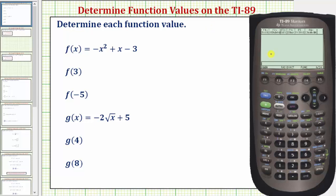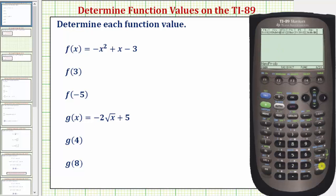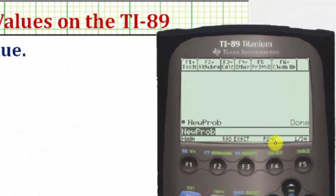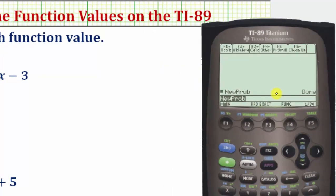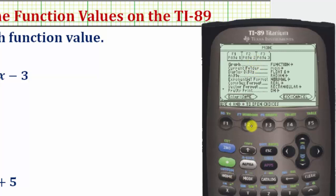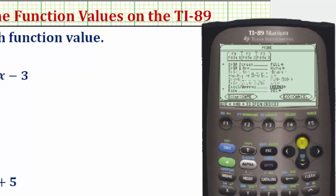Let's first start a new problem by pressing second F1 for F6, two for new problem, and then enter. I also recommend having the calculator in exact or automatic mode. Notice here at the bottom of the screen we are in exact mode. To review how to change the mode, press the mode key, F2 for page two, scroll down to where it says exact by pressing the down arrow, then the right arrow to change the mode to automatic, exact, or approximate.